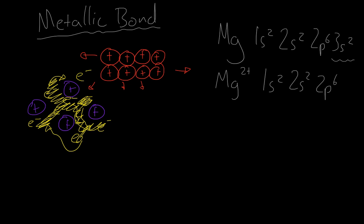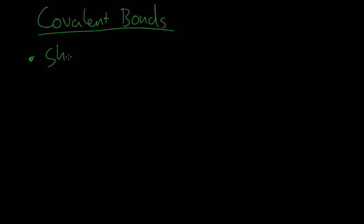So that's a summary of metallic bonds. Let's go on to covalent bonds. Now a covalent bond is the sharing of a pair of electrons.